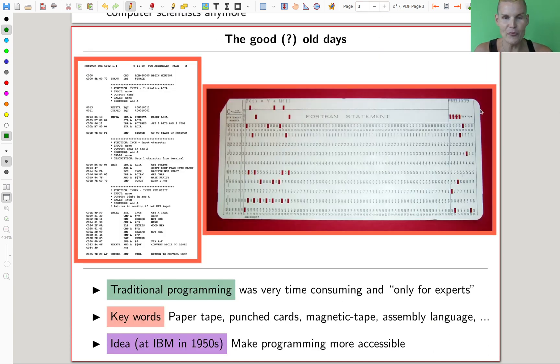But anyway, let me just go back to the good old days. When I was young, all the computers were like this - vacuum tube computers. Traditional programming was very time-consuming and essentially only for experts. There's nothing like Python. You don't do it at home on your laptop. It's very difficult. And what you should have in mind is keywords like punch card. I copied it from Wikipedia - they said 'punched card', and I would say 'punch card'.